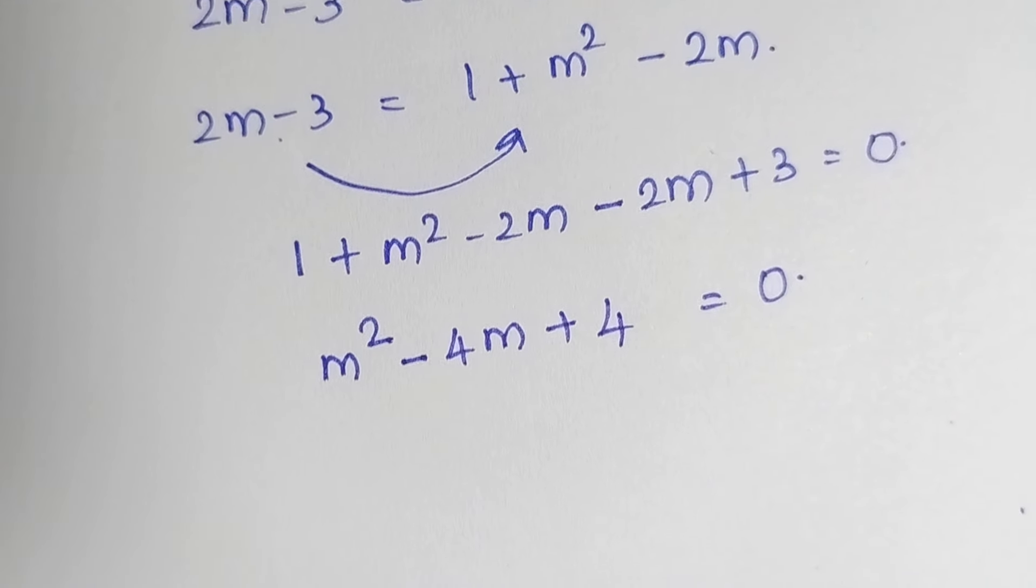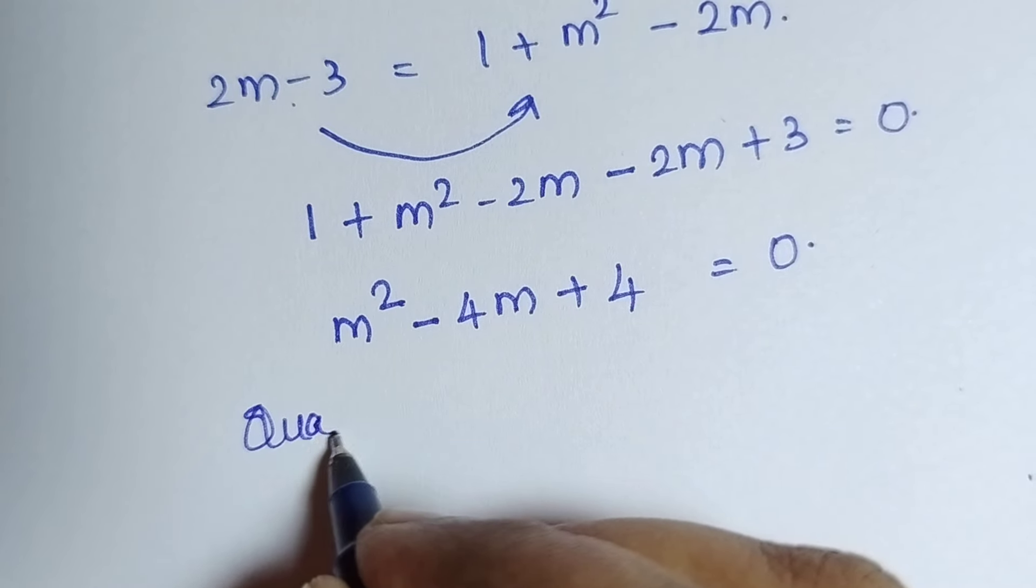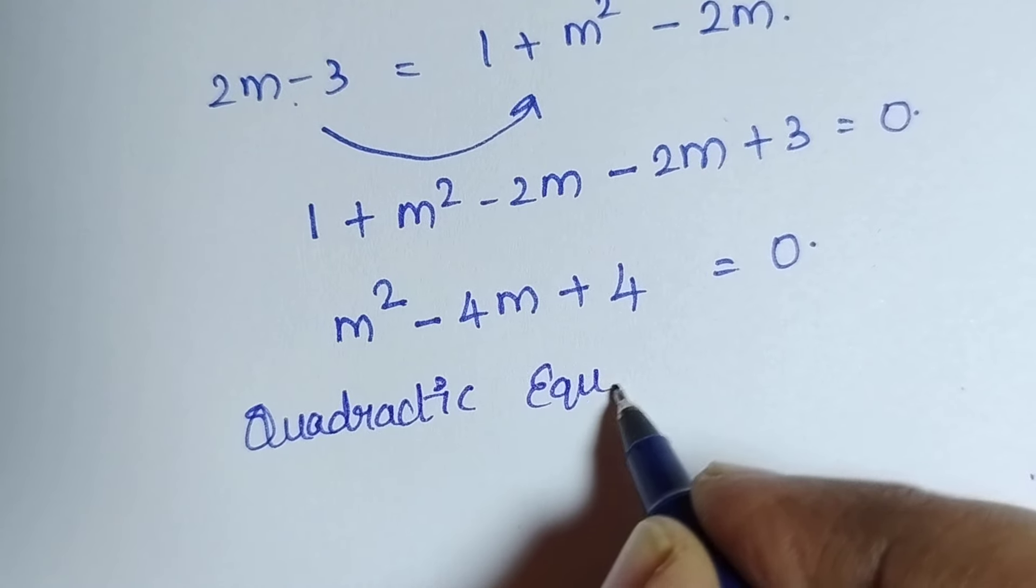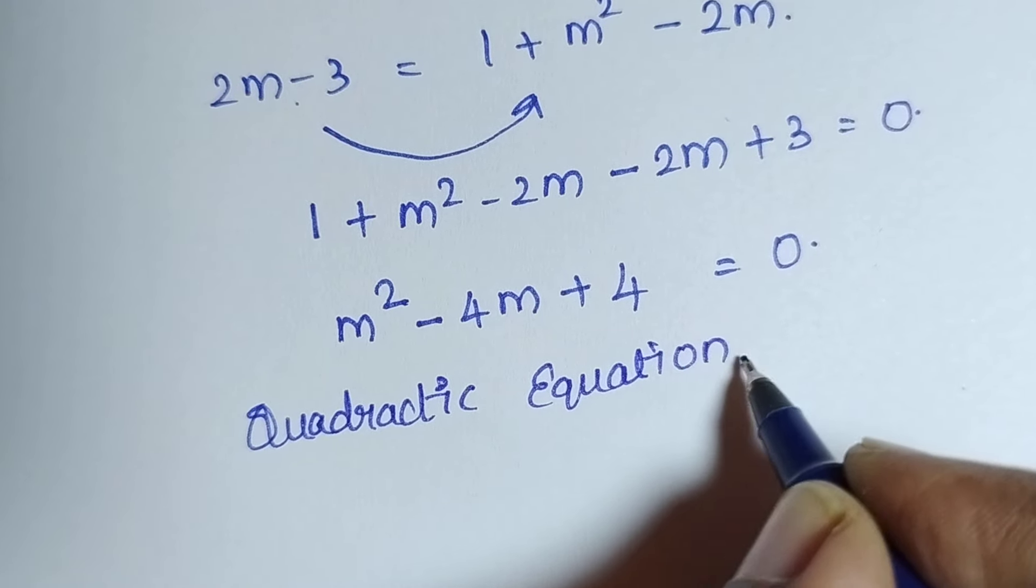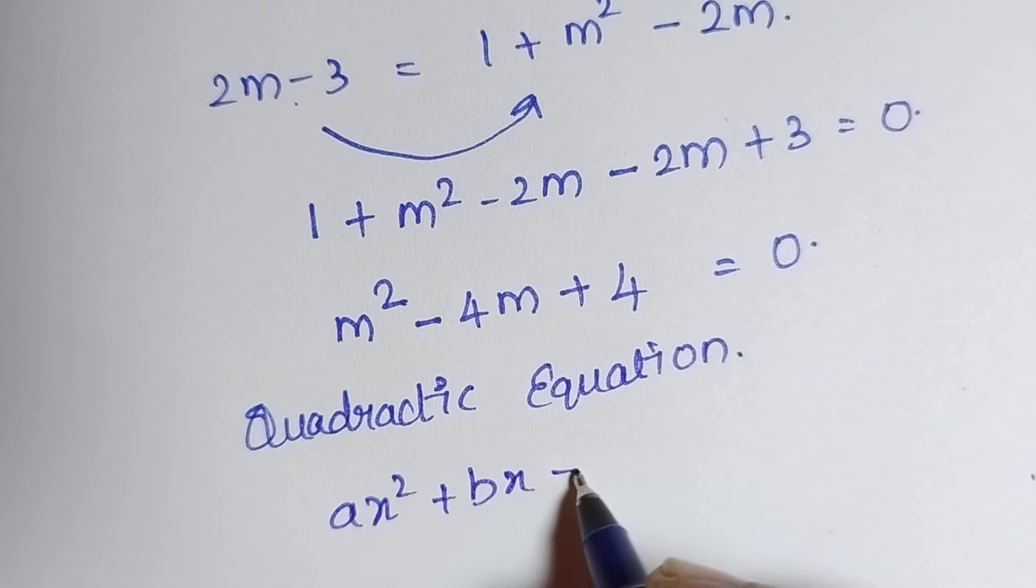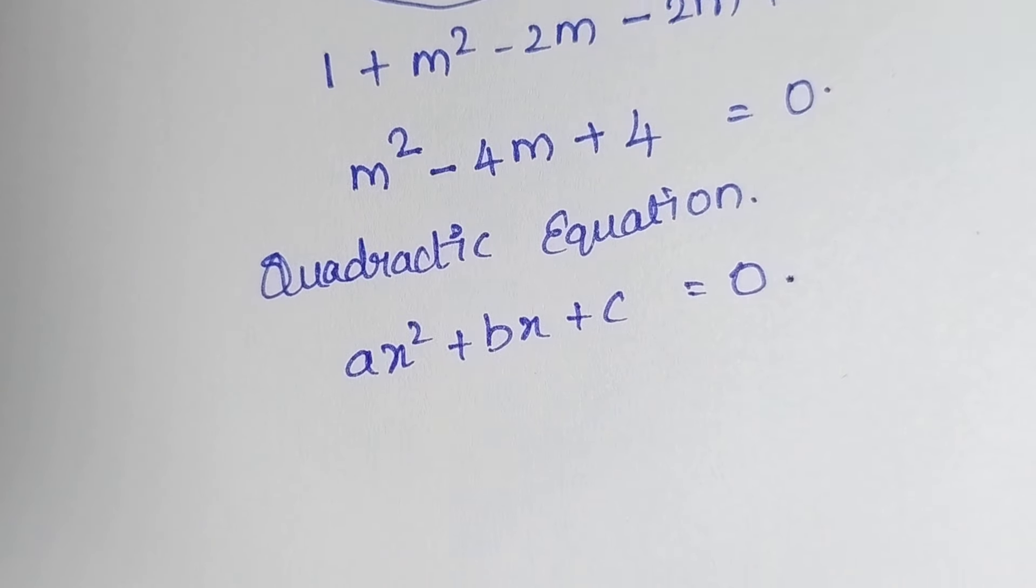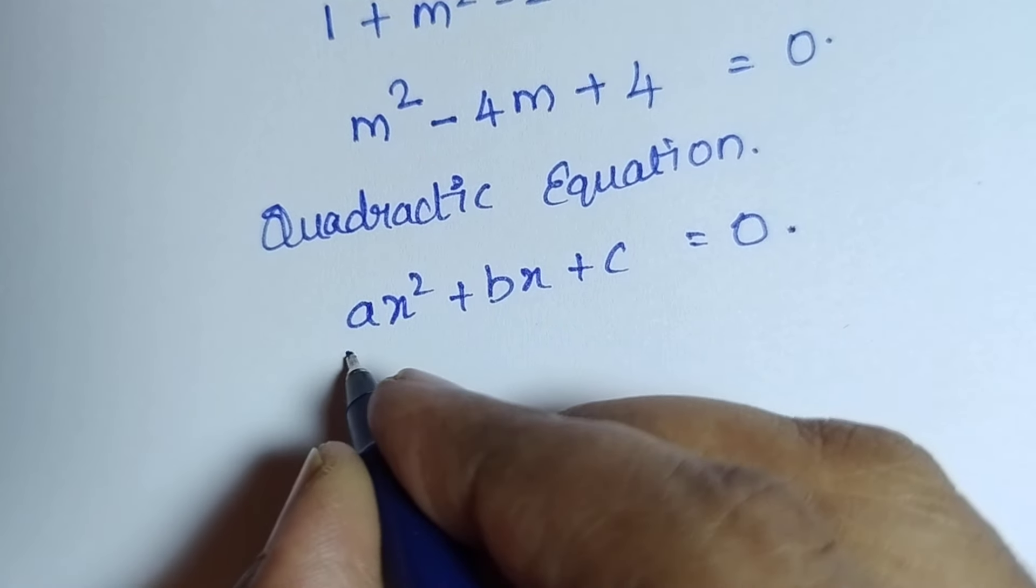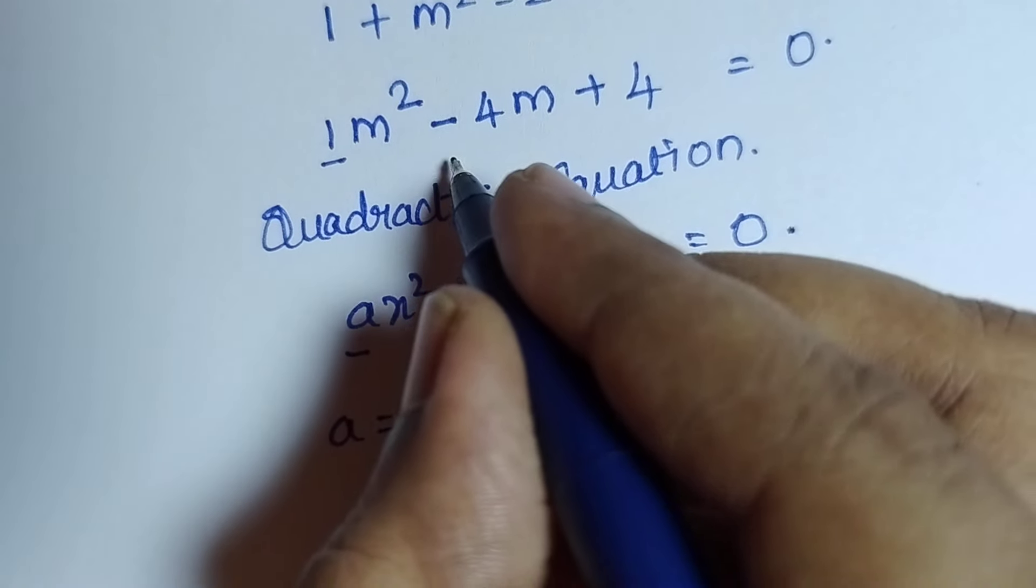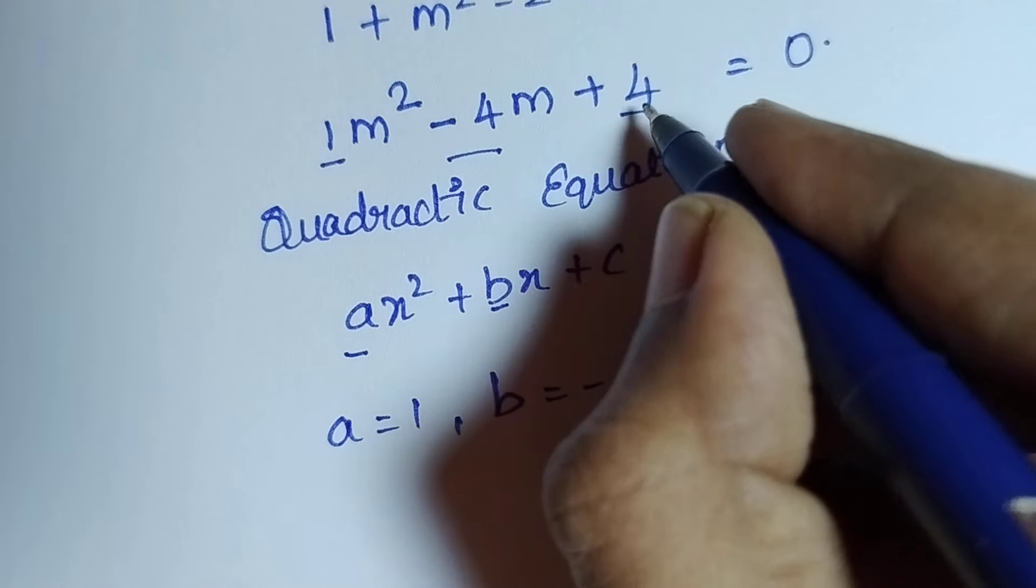Now this is in the format of quadratic equation. Quadratic equation is in the form of ax square plus bx plus c is equal to 0. Just compare and write the value of a, b, c. Here a is nothing but 1 and b is nothing but minus 4 and c is nothing but 4.